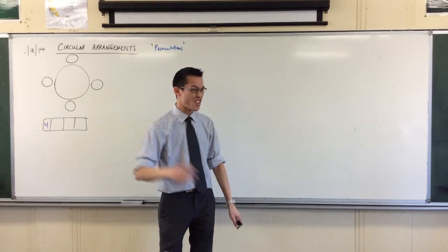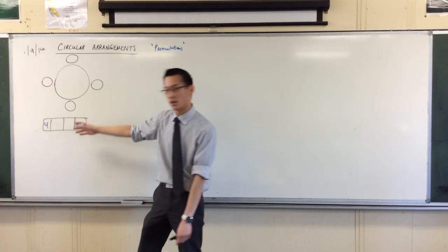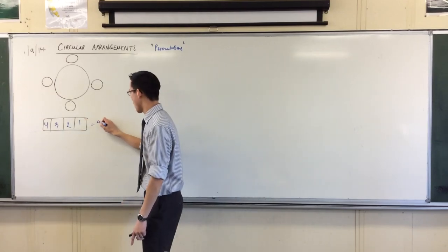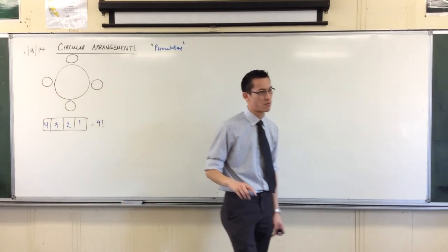Because you've got four things, right? And then you've got three more people left to put into the next spot, and then two, and then one. So this is where we've got our factorial notation from.